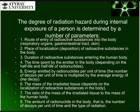The degree of radiation hazard during internal exposure is determined by a number of parameters: the route of entry; the place of localization of the radioactive substance in the body; the duration of radioactive substance entering the human body; the time spent by the emitter in the body; the energy emitted by radionuclides per unit of time; the mass of the irradiated tissue; and the ratio of the mass of the irradiated tissue to the mass of the human body.